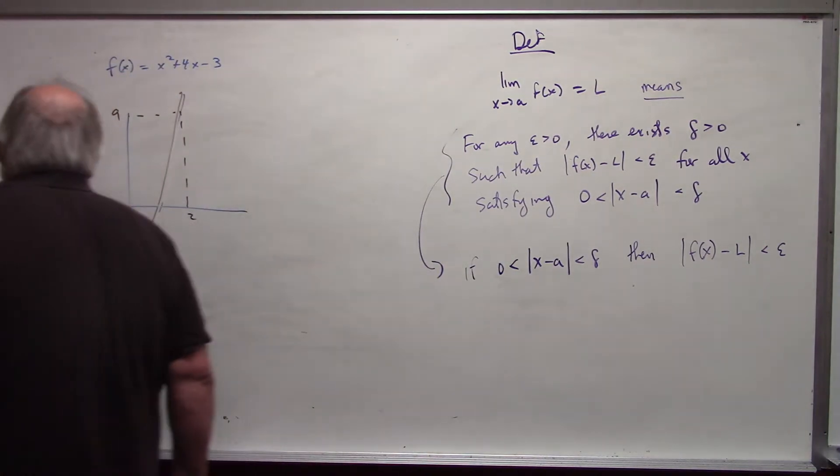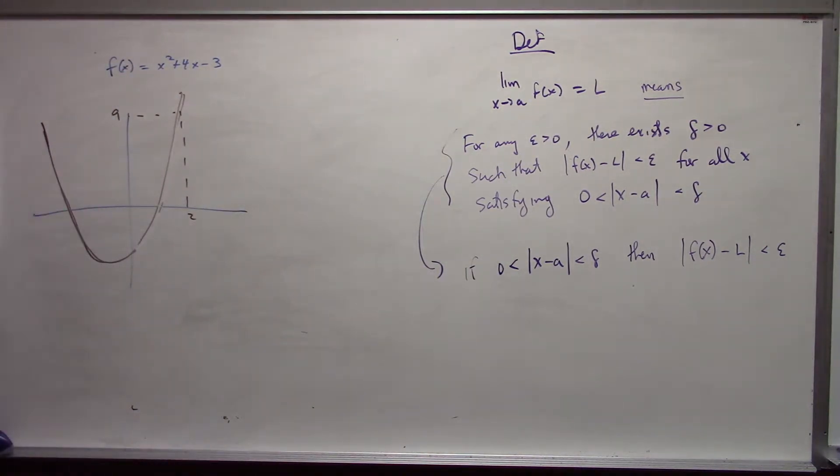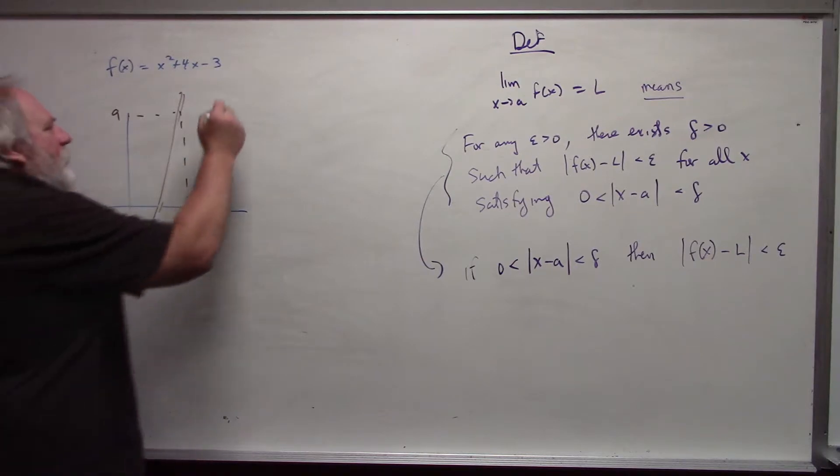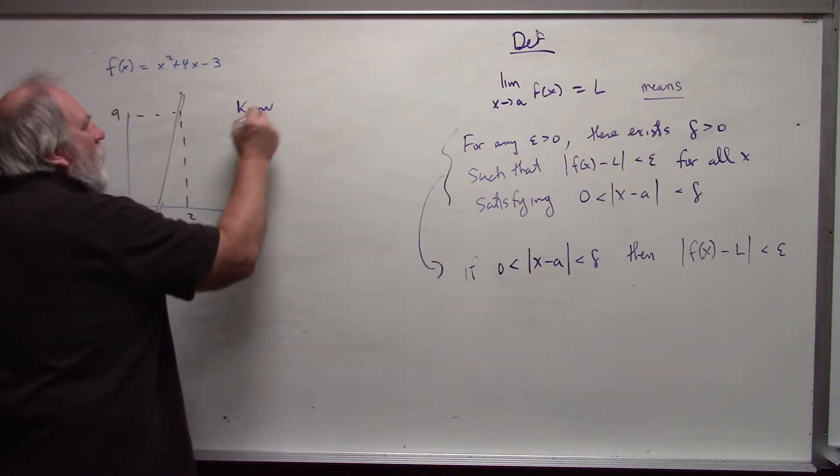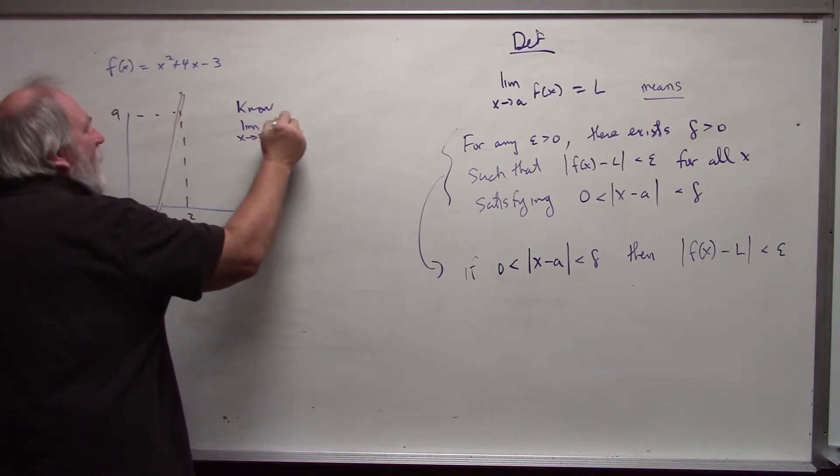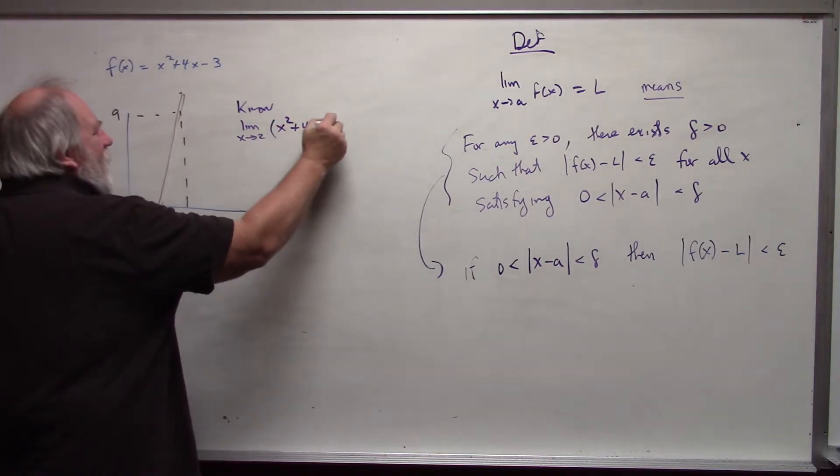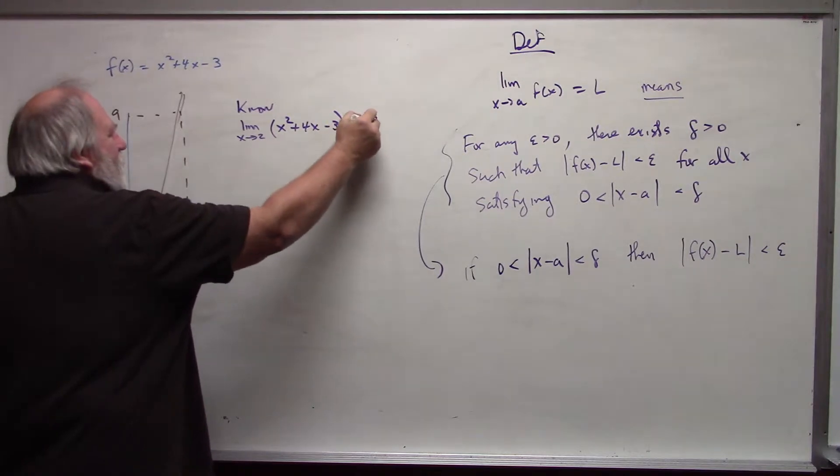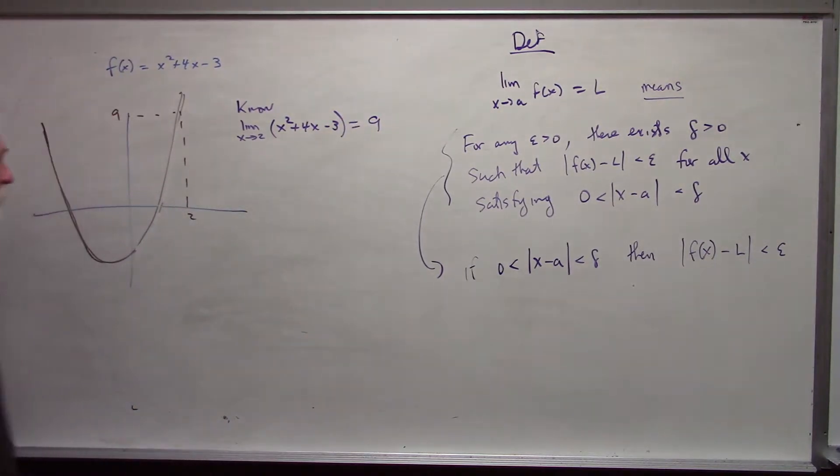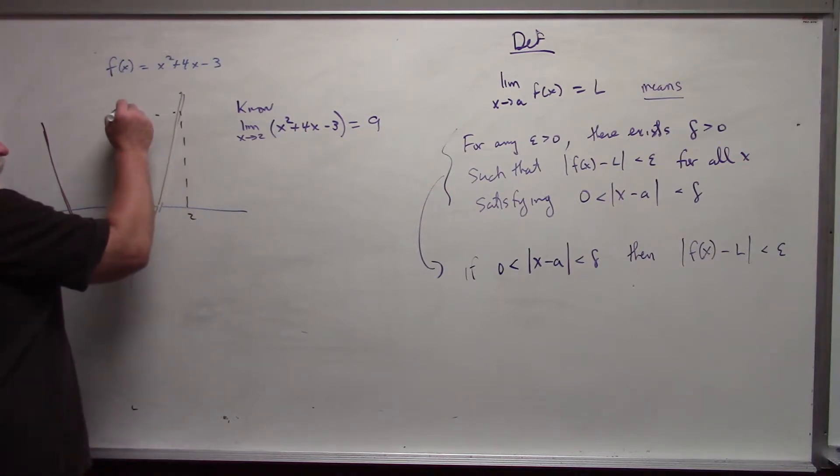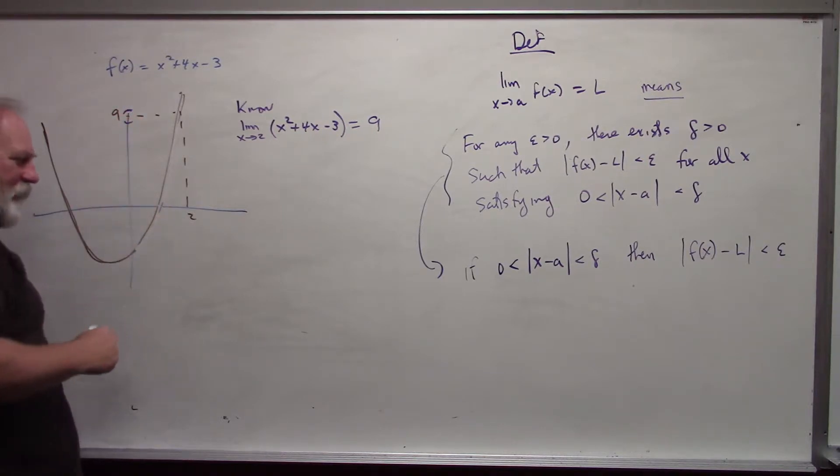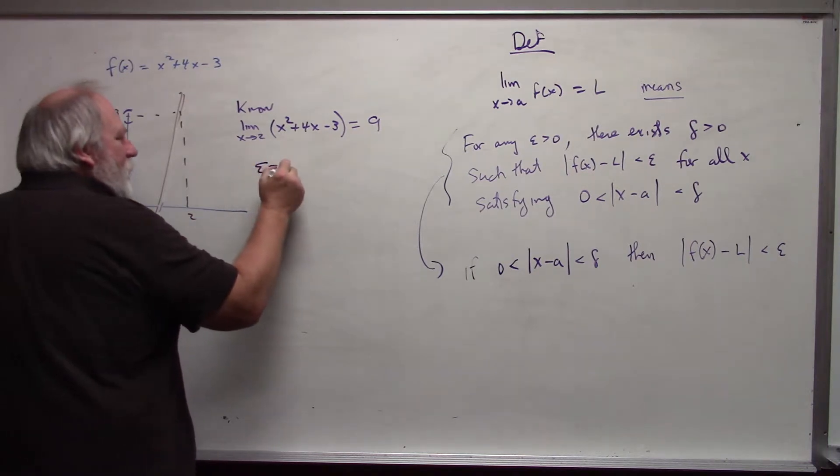So let's look at this particular example. We know the limit as x approaches 2 of the function x squared plus 4x minus 3 is equal to 9. So that being said, if I pick a distance that I want to be around the value for 9, let's let epsilon be 0.3.